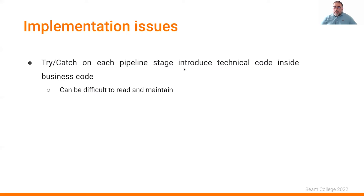Since you are doing try-catch on each stage of your data pipeline, what can happen is your code becomes difficult to read and maintain. Also, if you don't manage your errors correctly, you have to revisit your entire data pipeline to fix the error management. This is my introduction about error management. Now I will let Masloum speak about an initiative he has about exception management inside Beam and how to manage it efficiently.